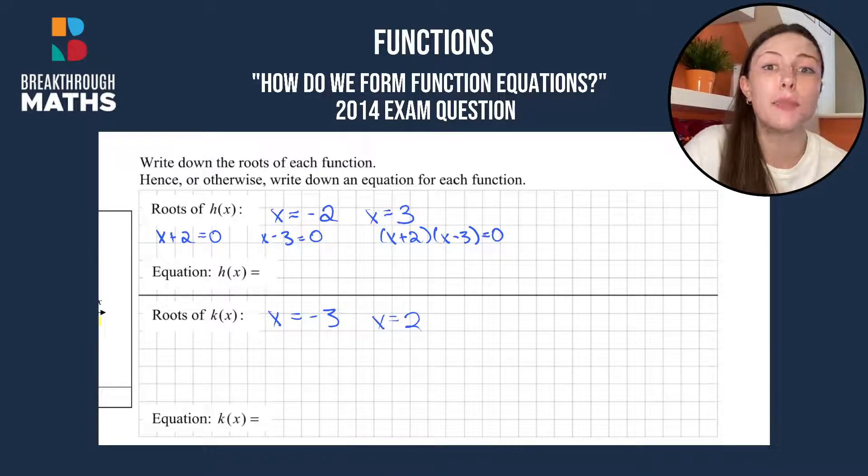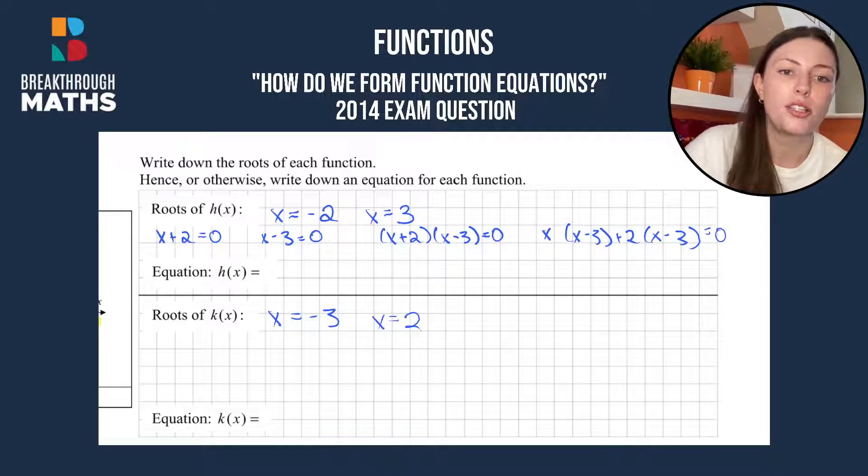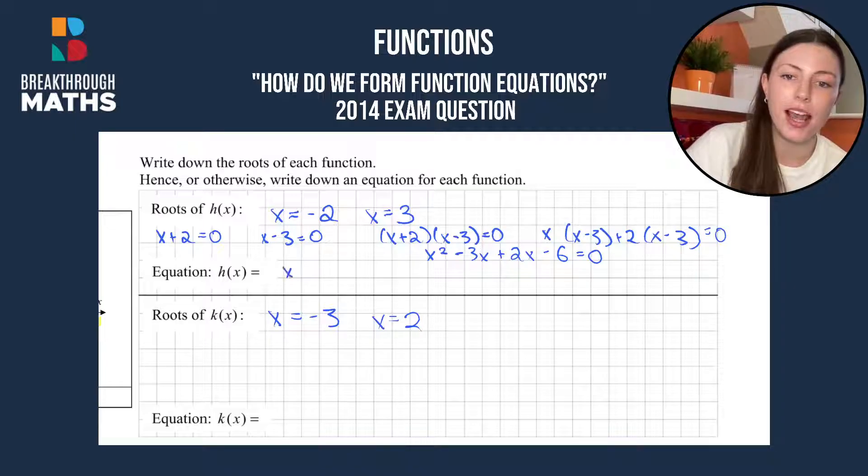Now we'll use the split and repeat method to multiply them out. So x minus 3, x minus 3, then we split the x plus 2 and that's all equal to 0. When we multiply the x in, we'll have x squared minus 3x plus 2x minus 6 equals 0. So writing our equation, h of x equals x squared minus x minus 6. We can see that minus 3x plus 2x gives us that minus x.